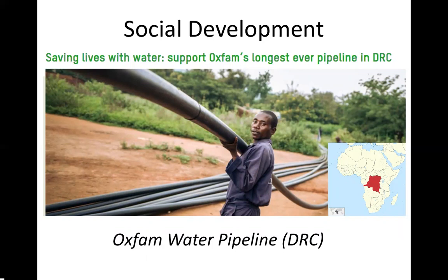The main example of social development I wanted to give is the Oxfam project building a 100-kilometre water pipeline in the Democratic Republic of Congo. The DRC is a very poor country in central Africa that has experienced devastating civil war and issues arising after gaining independence from Belgium as a colony. This pipeline will give people in remote and rural areas safe and regular access to water, which millions of people in that country do not have yet.